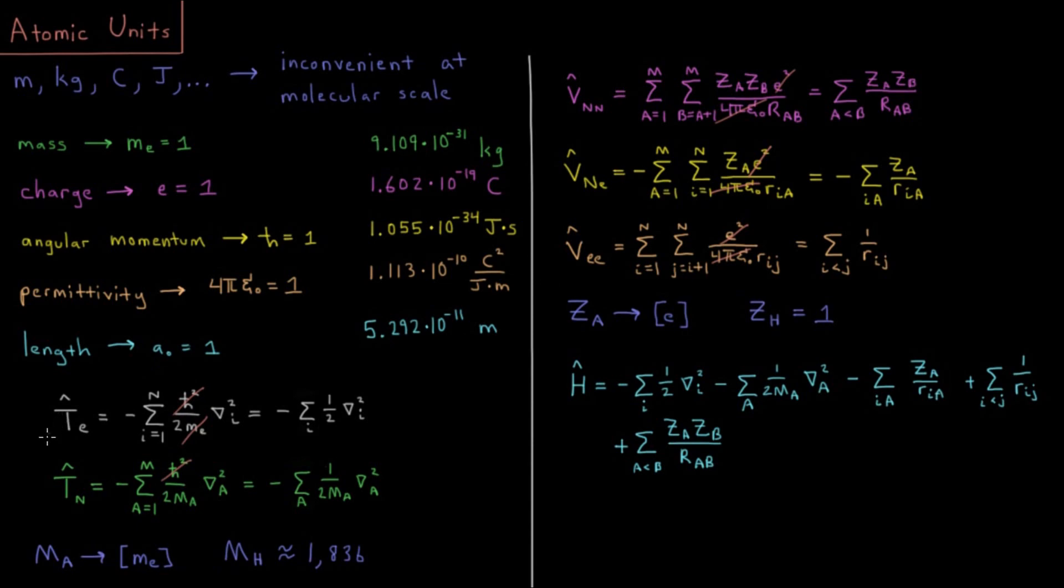Okay, so if we put this into action with the various terms that we have, we have kinetic energy for electrons and nuclei, and we have our potential energy for nuclear-nuclear repulsion, nuclear-electron attraction, and electron-electron repulsion. This allows us to simplify each of these terms down quite a bit into a simpler form.